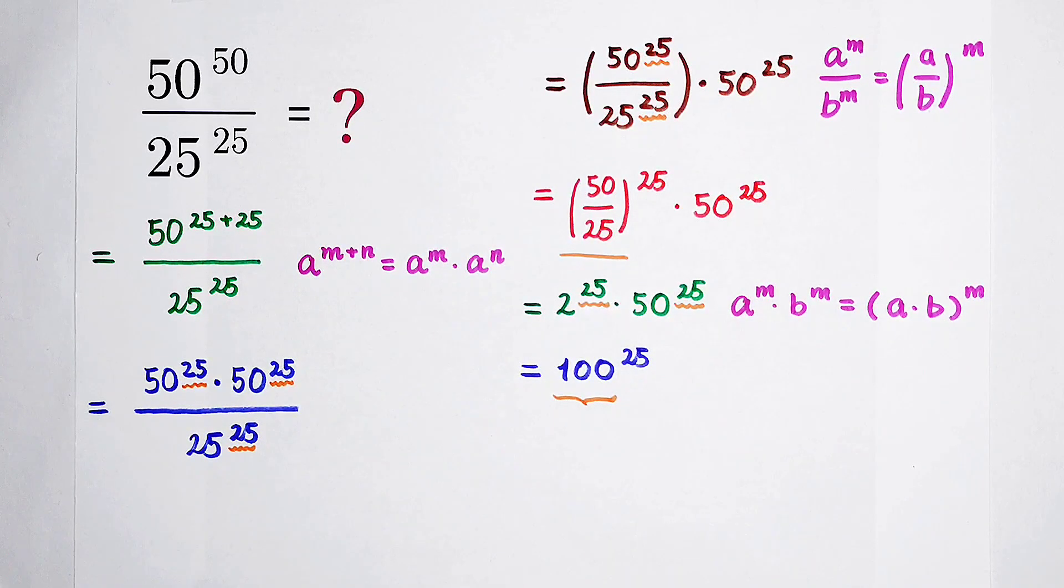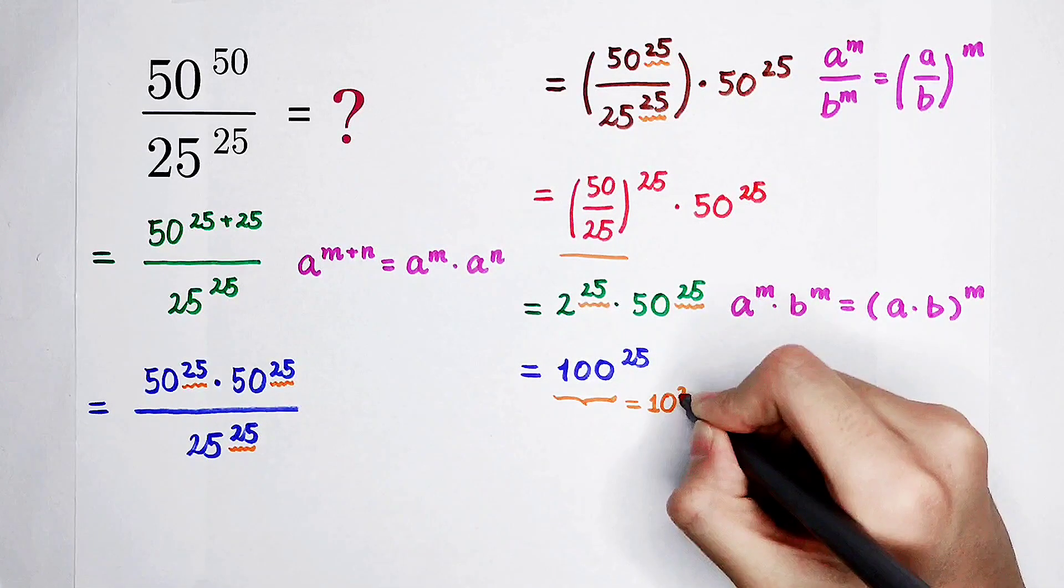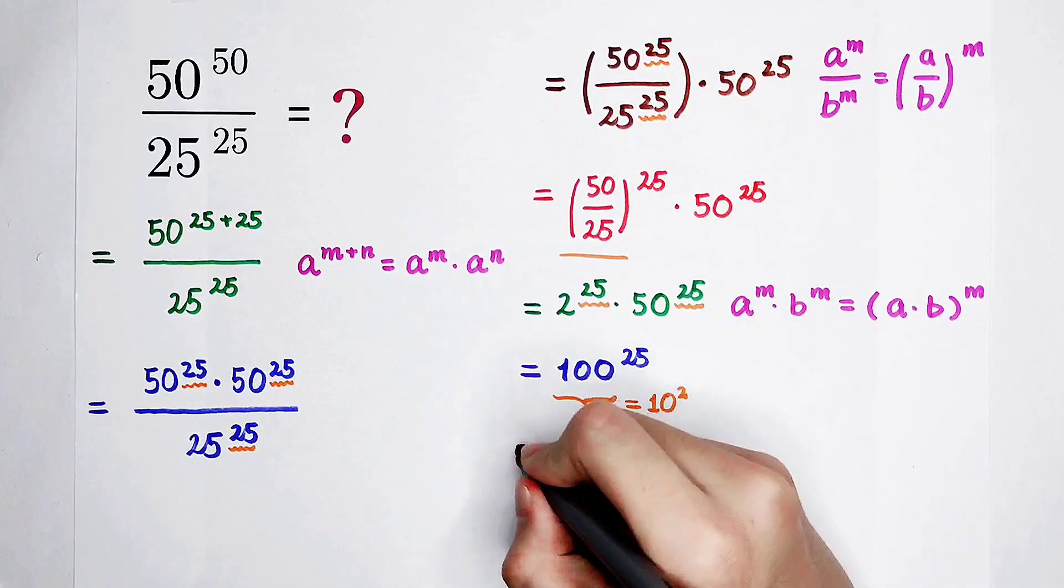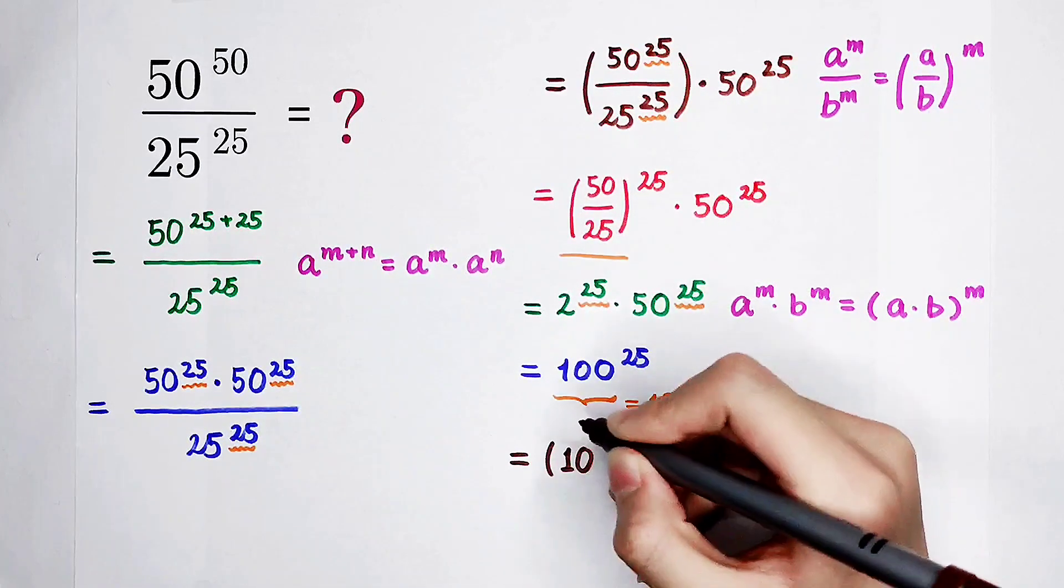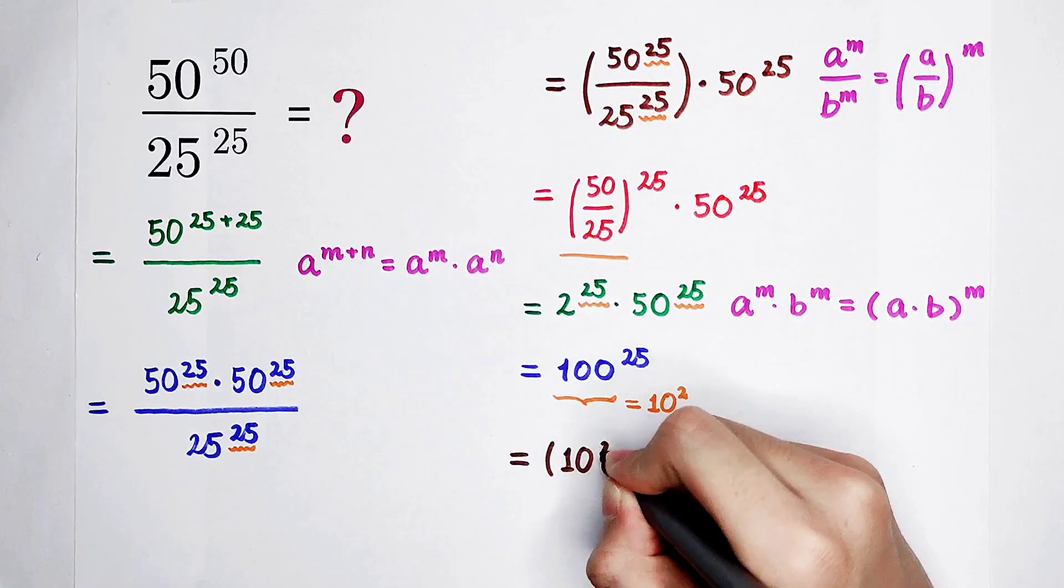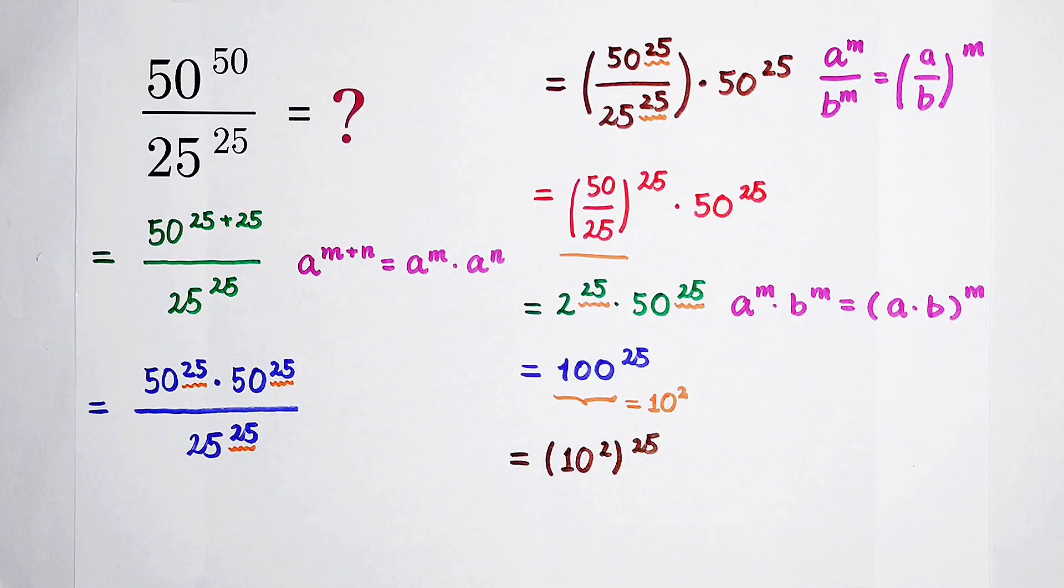Because this base, 100, I don't like it. Everybody knows that it is equal to 10 squared. So it is 10, 2 power of 2, and then also power of 25.